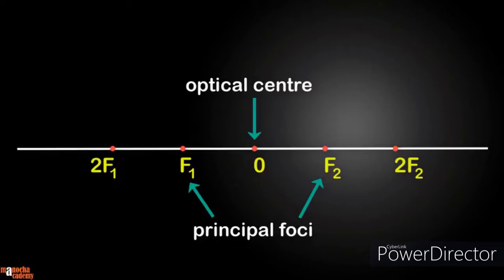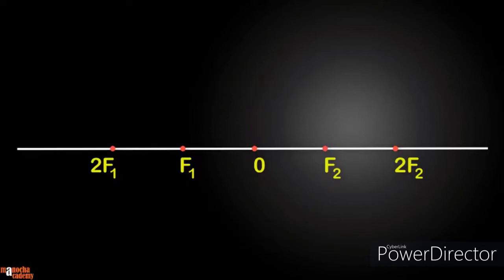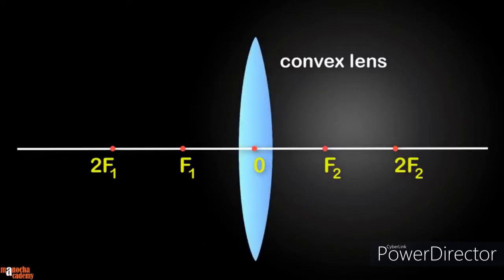Now draw the convex lens. You can roughly sketch the lens or use a compass to draw the two arcs of the convex lens. Make sure that the lens is thin — don't draw a thick lens.